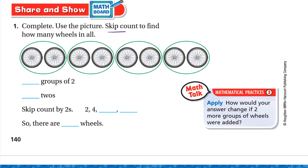Now use the picture to skip count and find how many wheels in all. Each circle has two wheels. We have four groups of two: one, two, three, four groups. Skip counting by twos: two, four, six, eight. So there are eight wheels in all.